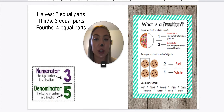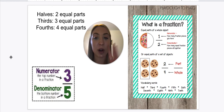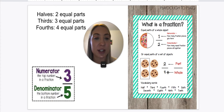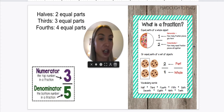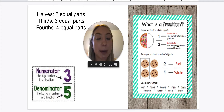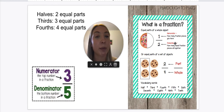So halves are two equal parts, thirds are three equal parts, and fourths are four equal parts. So what is a fraction? The top number is our numerator — that's how many fraction pieces you have, or how many are shaded in.